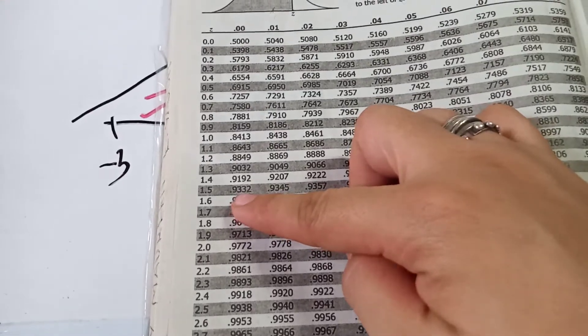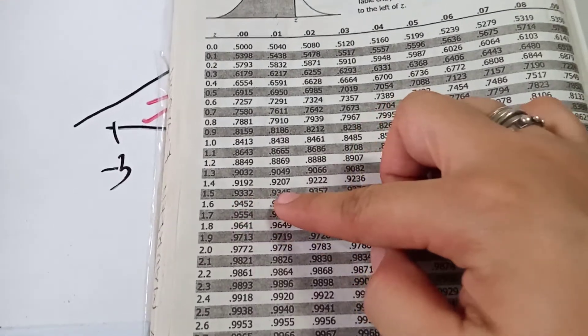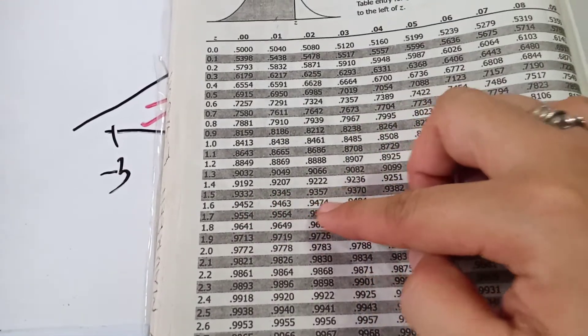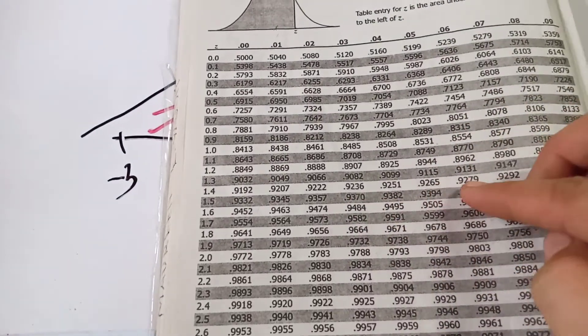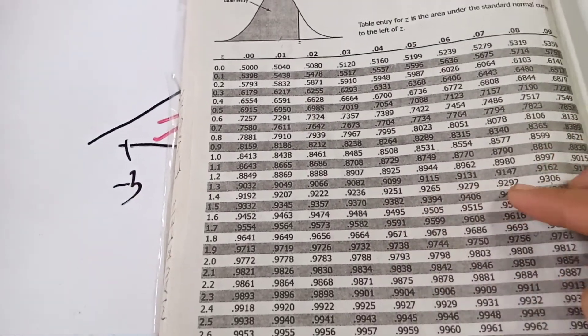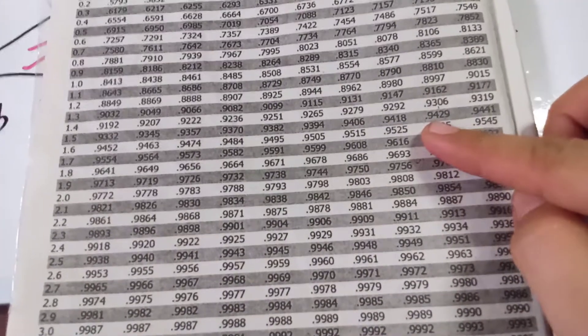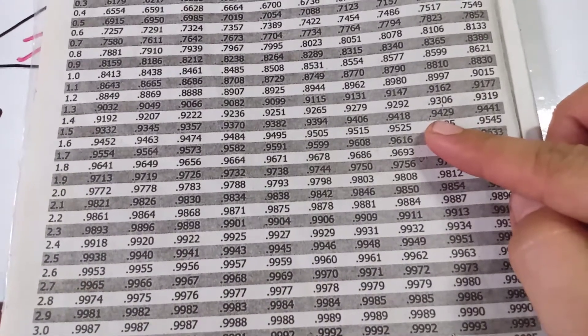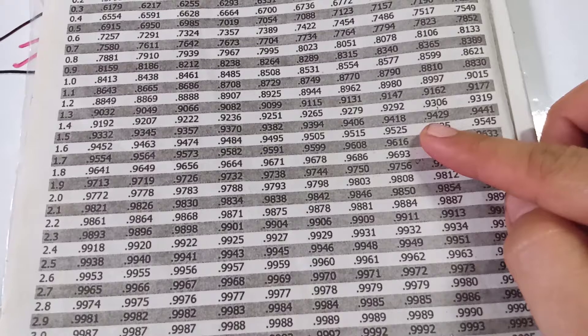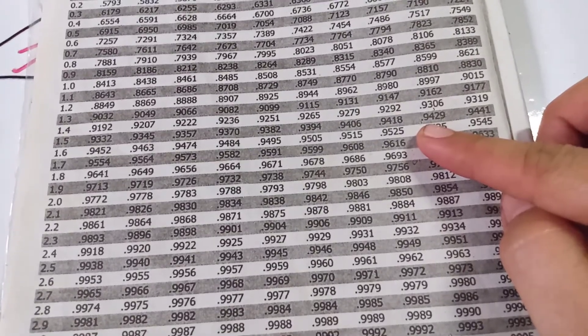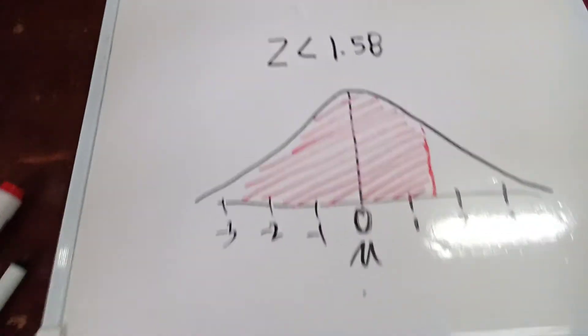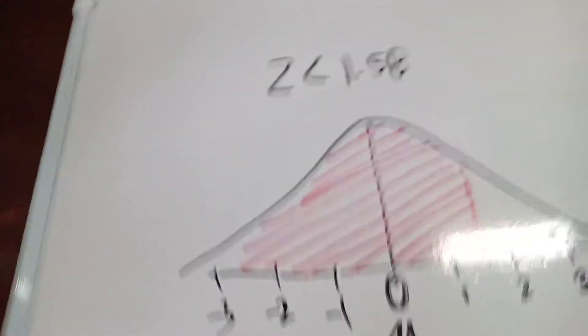Reading across the columns: 0.00, 0.01, 0.02, 0.03, 0.04, 0.05, 0.06, 0.07, 0.08 — so our value for 1.58 is 0.9429.